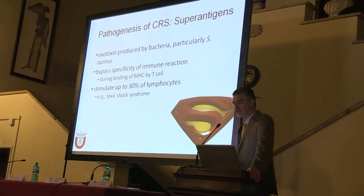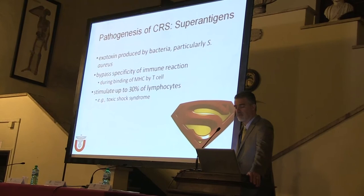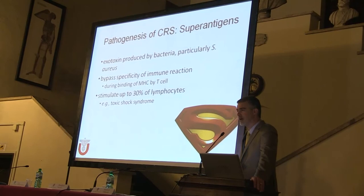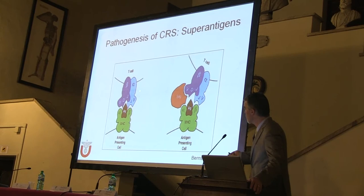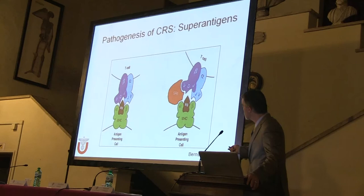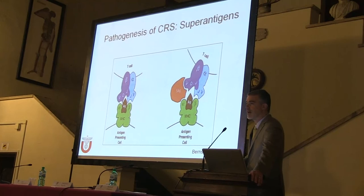Superantigens are exotoxins produced by bacteria, particularly Staph aureus. They bypass the selective immune reaction, binding the major histocompatibility complex of the T-cell and stimulating a large number of lymphocytes. Rather than following the normal antigen presentation pathway, a superantigen bypasses the specific binding area and stimulates the V-beta variable region of the T-cell, turning on up to 30 percent of lymphocytes.